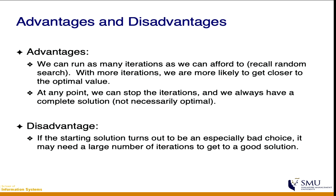The pro is that you can actually control the number of iterations used to try to improve the solution. For example, with a greedy algorithm you cannot stop halfway — if you stop in the middle you don't get a complete tour, so it's not a valid solution. But with local search, since you start with a complete solution, at any point you want to stop, you just stop and you already have the best solution found so far.